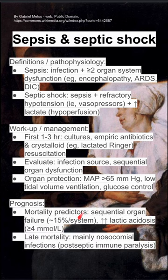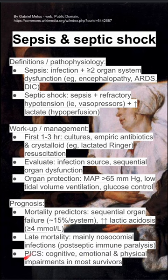Prognosis: mortality predictors include sequential organ failure, at least 15% per system, and very high lactic acidosis is a bad predictor for prognosis. Late mortality is mainly nosocomial infections. Lastly, the post-ICU care syndrome involves cognitive, emotional, and physical impairments in most people who survive septic shock.